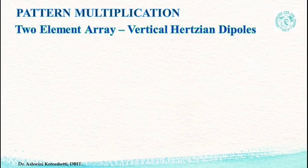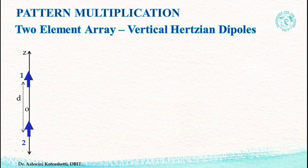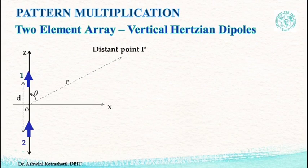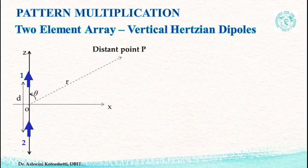Let us consider a simple case of two ideal dipoles spaced at a distance d apart along the z-axis. Since the elements are along a common axis, that is the z-axis, we can call this a collinear array. We are interested in finding the net electric field due to the two sources at a distant point P. Note that the sources are along the z-axis, and hence the distance r from the axis to the distant point P makes an angle theta with respect to the z-axis.